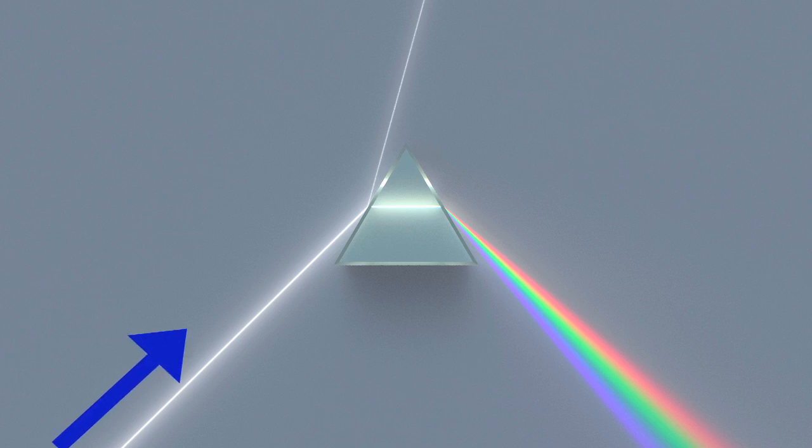From the bottom left, you see the incident beam of white light, and towards the top, it's partially reflected. Within the prism, the white light is refracted, and when it hits the surface to the right of the prism, it's refracted and dispersed at the same time.